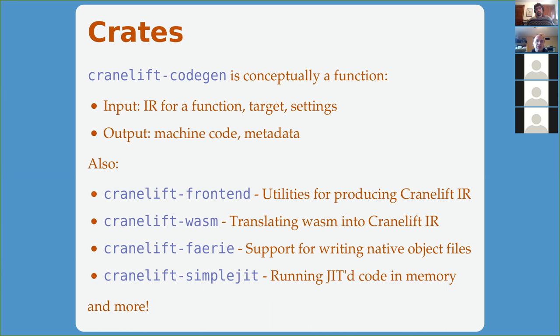Along with the code gen crate, we have several other crates. CraneLift Frontend helps produce CraneLift IR and build up the data structure to hand to the code generator. CraneLift Wasm translates WebAssembly code into CraneLift IR. CraneLift Faerie generates native object files (.o files) with CraneLift code. We also have CraneLift SimpleJit — a simple framework that ties things together and lets you run the generated code in memory by making it executable and running it directly.